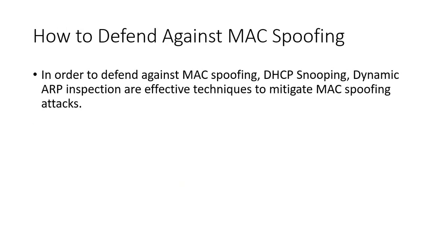Now, how can we defend against MAC spoofing? It's very simple — we can use DHCP snooping, or you can say Dynamic ARP Inspection. These two techniques are very effective to mitigate MAC spoofing attacks.